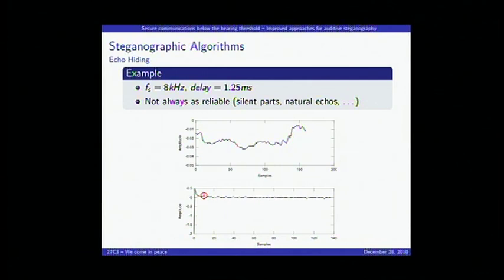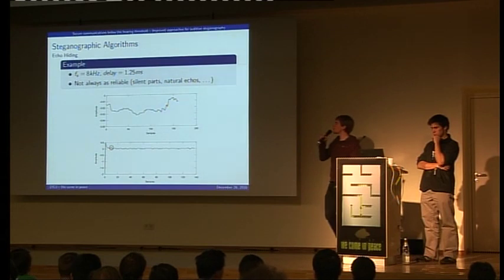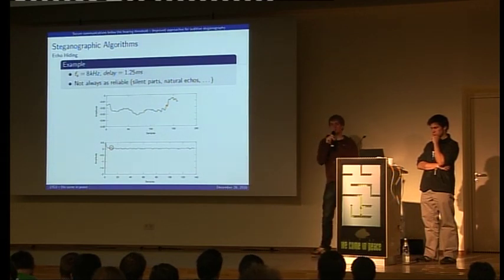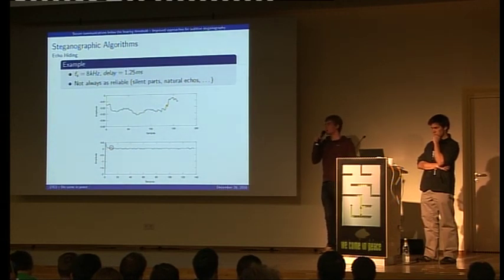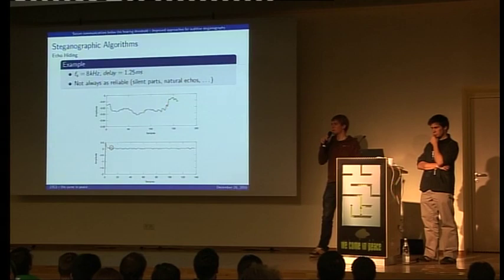For example, with 160 samples at 8 kHz — that's 20 milliseconds — with an echo built in at a delay of 1.25 milliseconds, the cepstrum shows a peak at sample number 10, which corresponds to 1.25 milliseconds. Note that this doesn't always work reliably: silent parts or natural echoes already in the signal can disturb the receiver, making it tricky to extract all secret data.